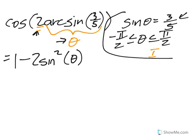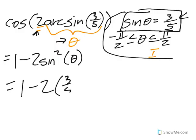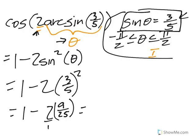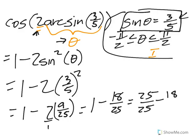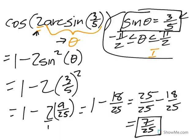Sine of theta is 3/5, so sine squared theta is (3/5)² = 9/25. Therefore cos(2θ) = 1 − 2·(9/25) = 25/25 − 18/25 = 7/25. That's the cosine of twice this angle.